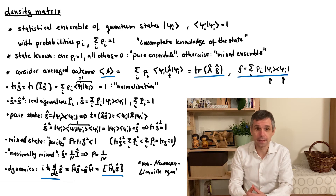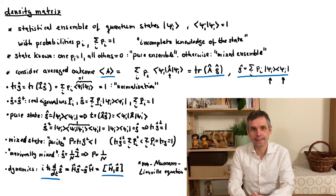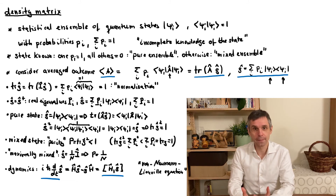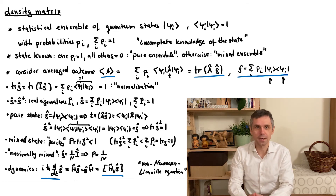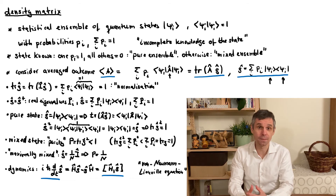Incidentally, it looks a little bit like the equations of motion in the Heisenberg picture, but it actually differs by a minus sign. Indeed, here we still work in the Schrödinger picture, and this simply replaces the Schrödinger equation. As before, the dynamics is still generated by the Hamiltonian. This completes our discussion of the definition and the most important general properties of the density matrix. Next, we turn to a simple example, because in practice it is not as complicated as it might look from these abstract definitions.